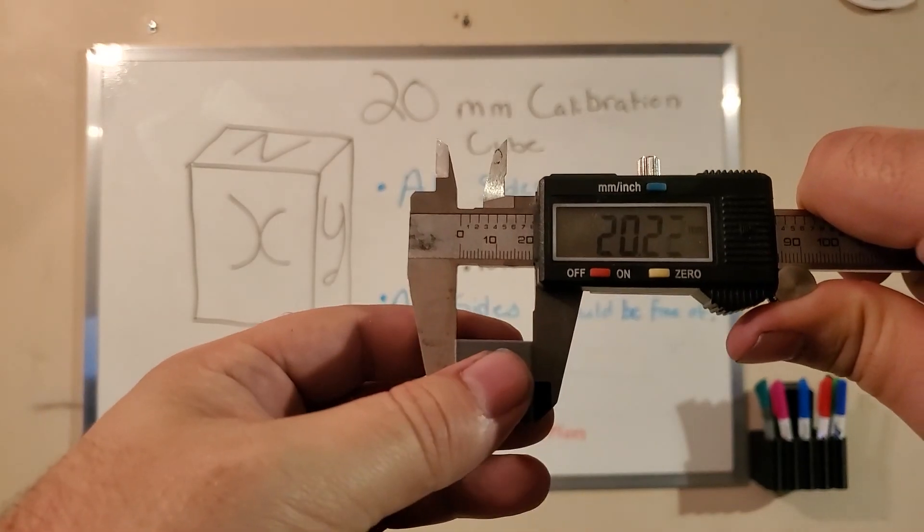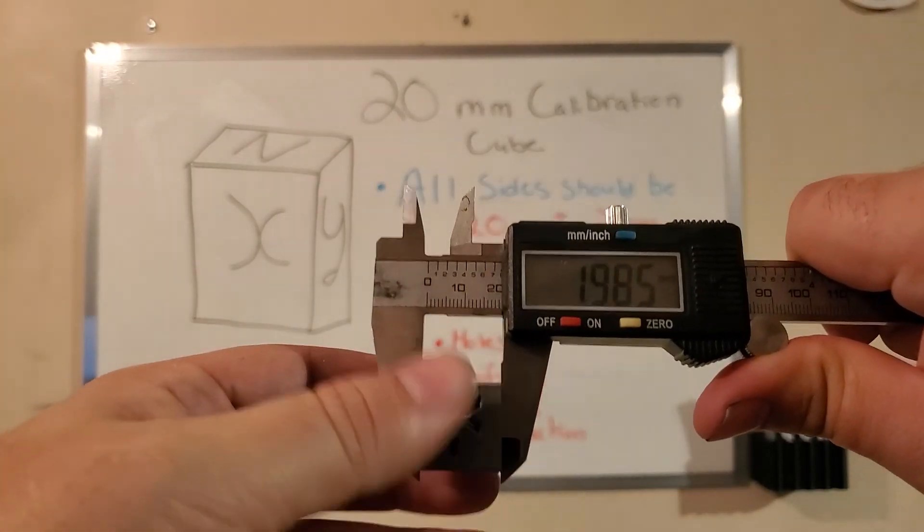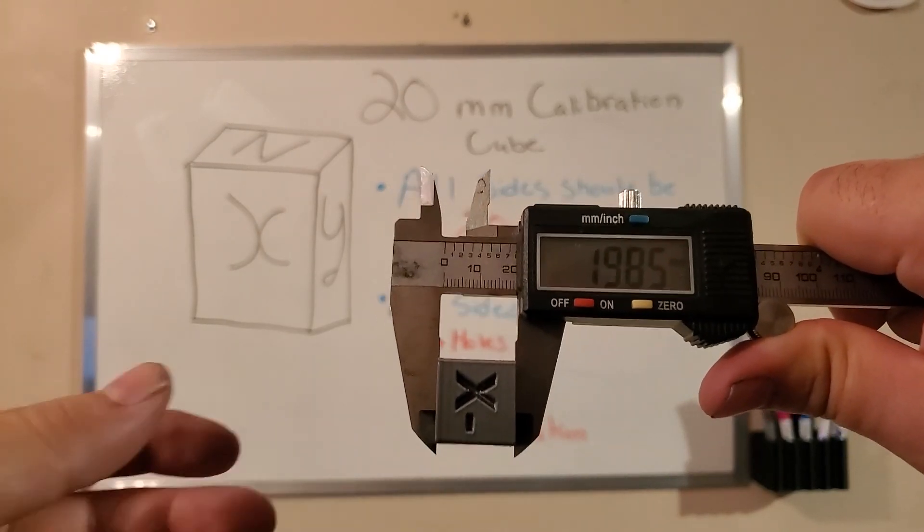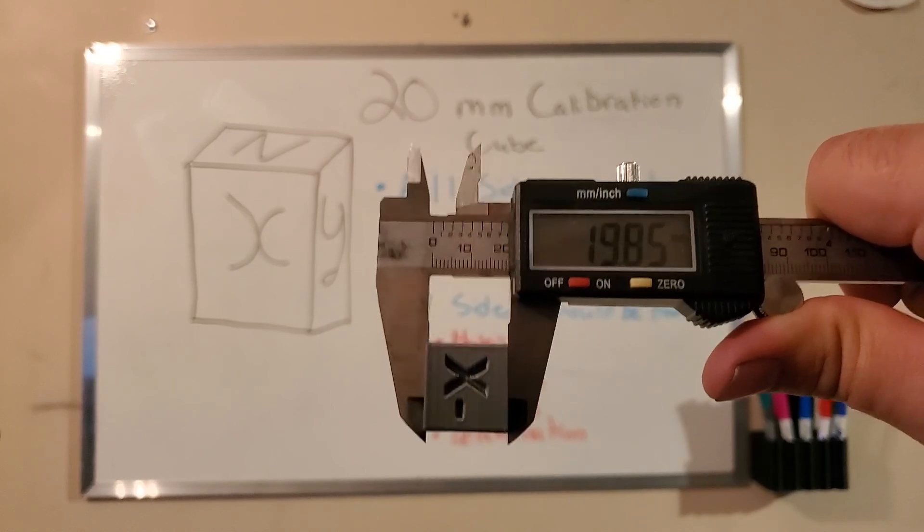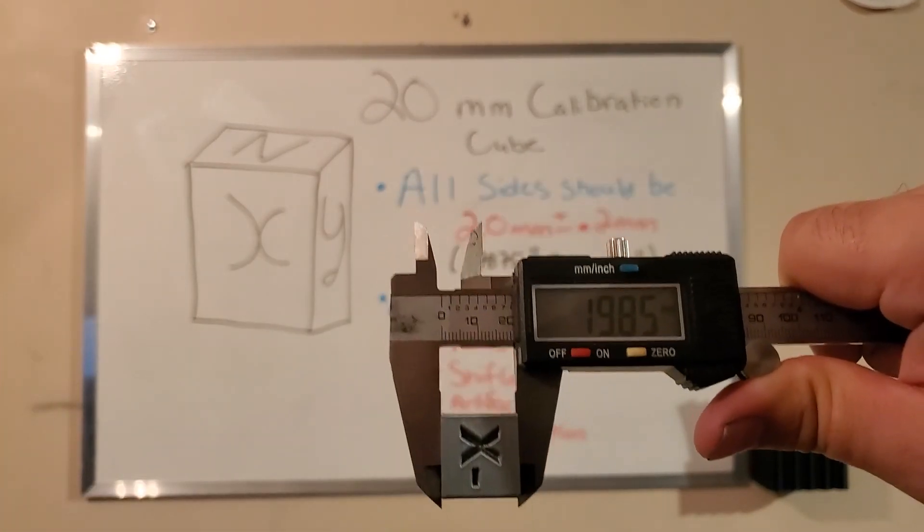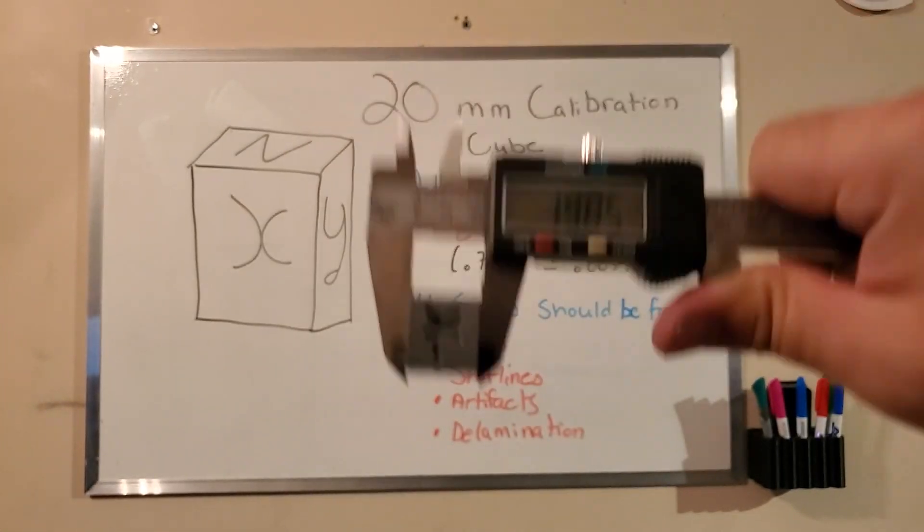And then we'll check the top here. And we got 19.85. So also pretty close. So I would consider this printer fairly well calibrated. But if you're a stickler for details, you can definitely go in and hone those in so it'd be exactly 20 mil.